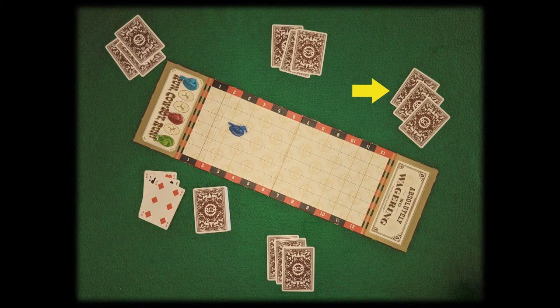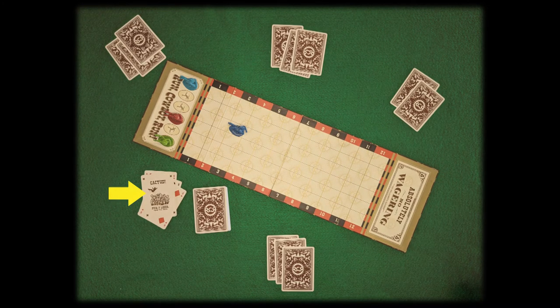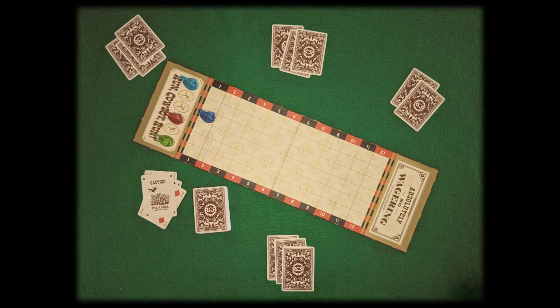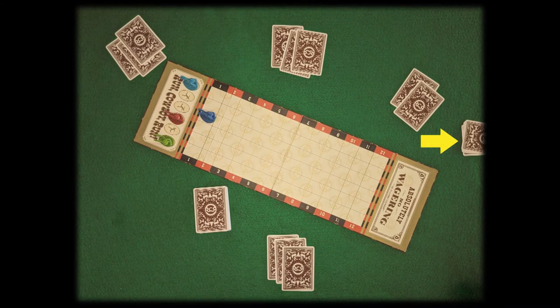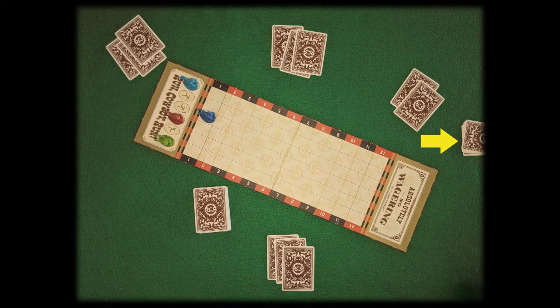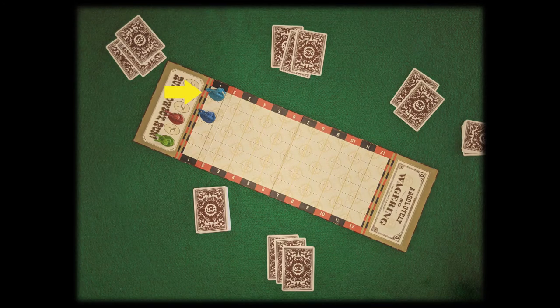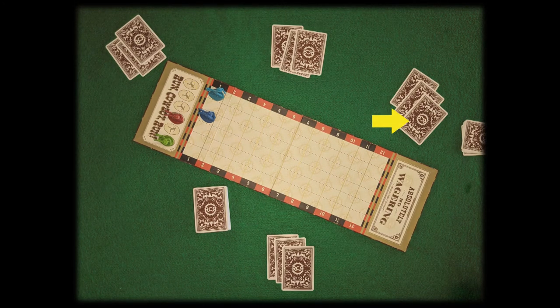Player number three does not have a six, unfortunately, but she has two Hazard cards, so she plays one now. She moves player number two's cowboy back two spaces, and she takes the trick, taking the discard pile and setting it to the side, and moving her cowboy one space. She also takes a new card from the draw pile.